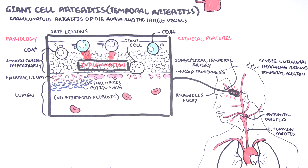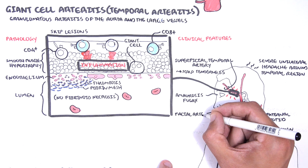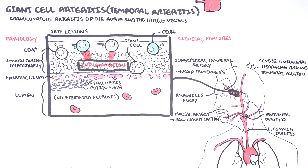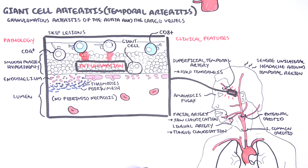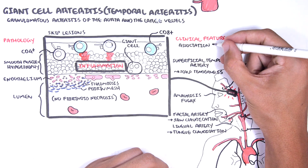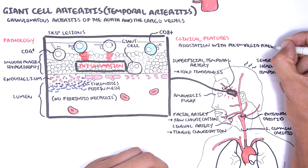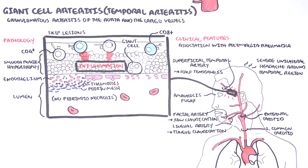Visual changes are common and include transient visual loss called amaurosis fugax, or even complete visual loss. If the facial artery is affected, jaw claudication can occur. If the lingual artery is affected, tongue claudication can occur. Symptoms of jaw and tongue claudication, such as pain when eating and chewing, are highly specific for giant cell arteritis. Polymyalgia rheumatica is also closely linked to giant cell arteritis, occurring in up to 50% of patients.